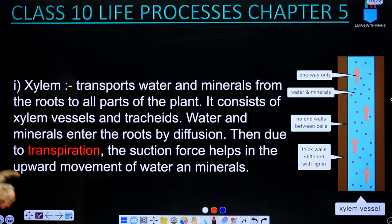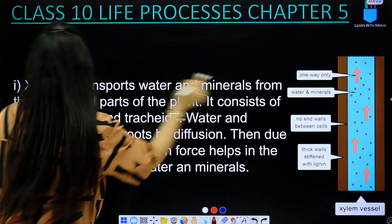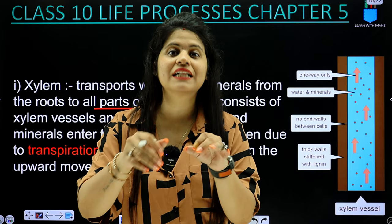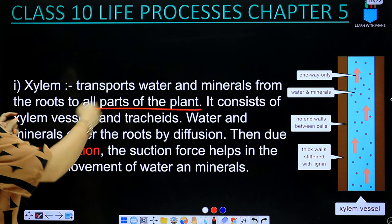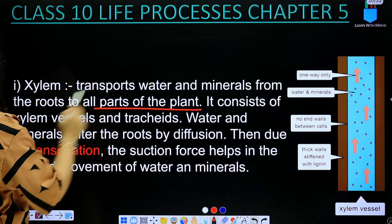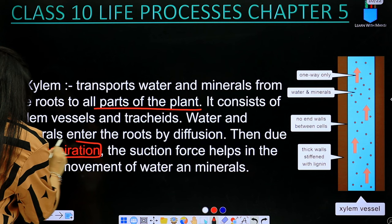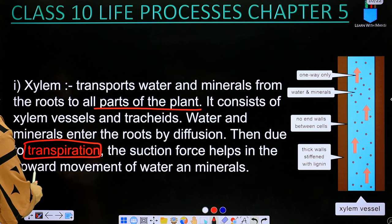Let's talk about xylem. It transports water and minerals from the roots to all parts of the plant. So when we put water in a pot for a plant in our house, the water enters from the roots. Xylem consists of xylem vessels and tracheids. Water and minerals enter the roots by diffusion, then due to transpiration, the suction force helps in the upward movement of water and minerals.